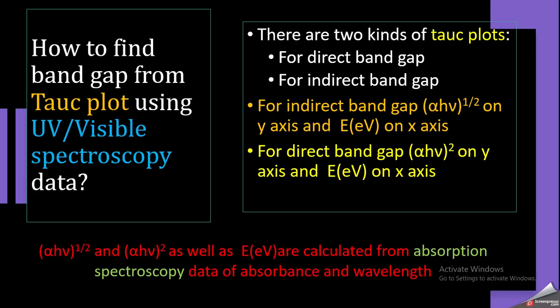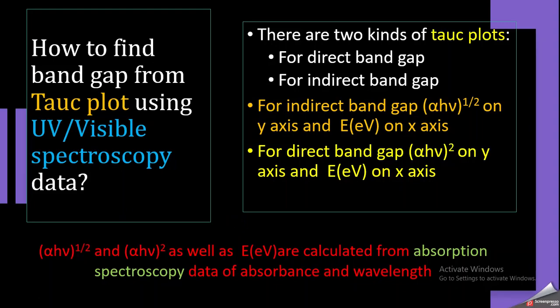Hello students. In this video we are going to see how we can find the band gap of a material using Tauc plots, if you have data from UV-visible absorption spectroscopy. Basically there are two kinds of Tauc plots that you can draw to determine the band gap of your material: the first one is the direct band gap and the second one is the indirect band gap.